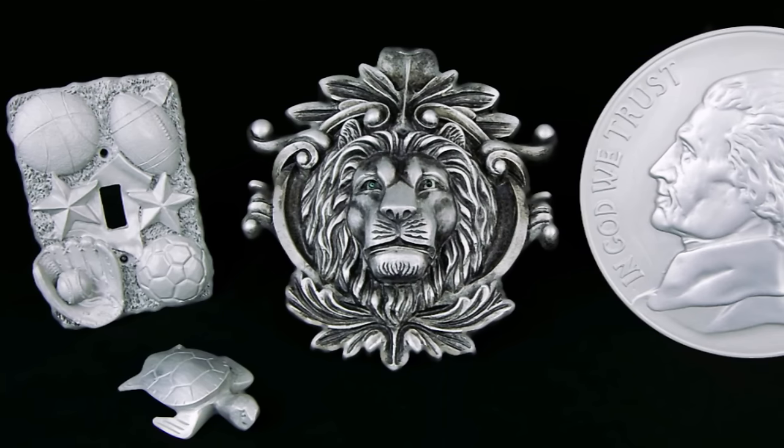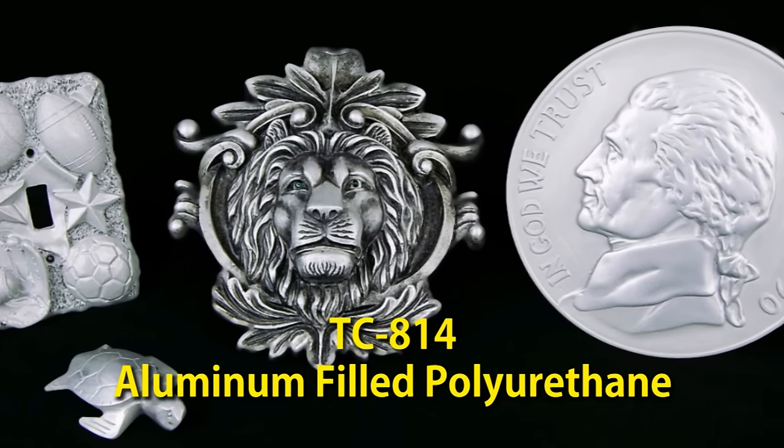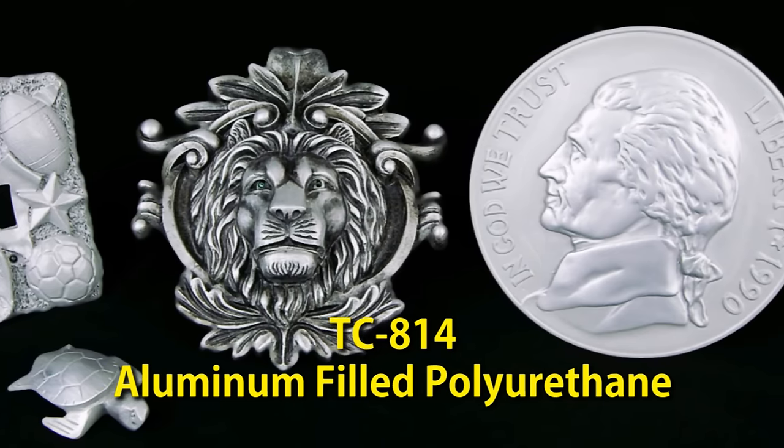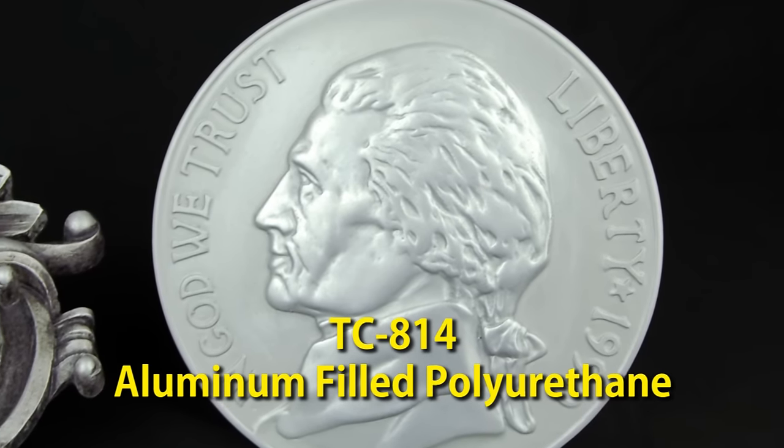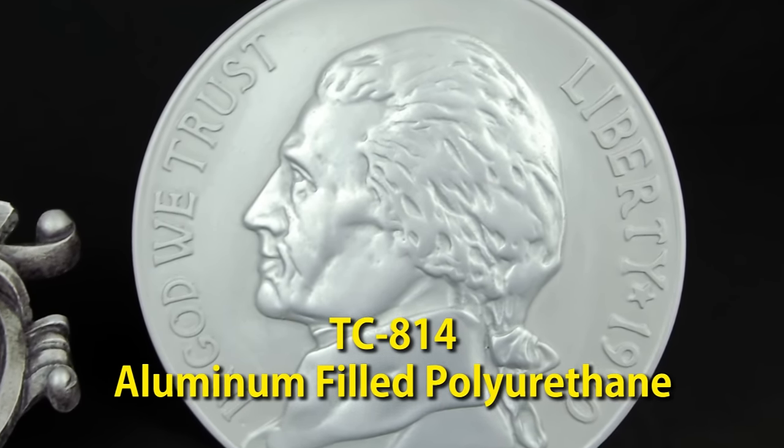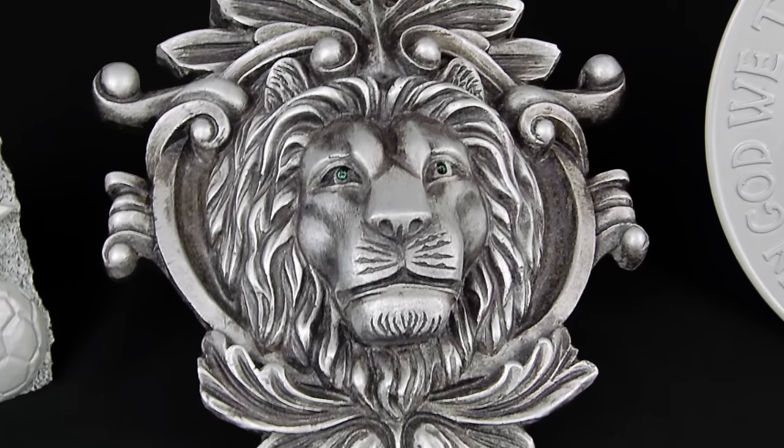For the cast parts, we're going to use a unique material used for a variety of applications. TC814 is an aluminum-filled, fast casting polyurethane that exhibits low shrink, low exotherm, and quick demolds. It has the weight, look, and feel of metal that you don't get from traditional casting materials.